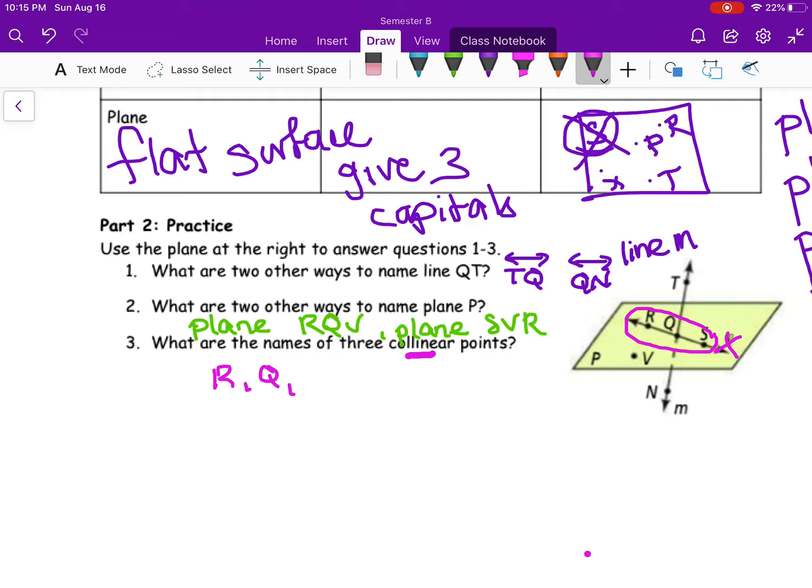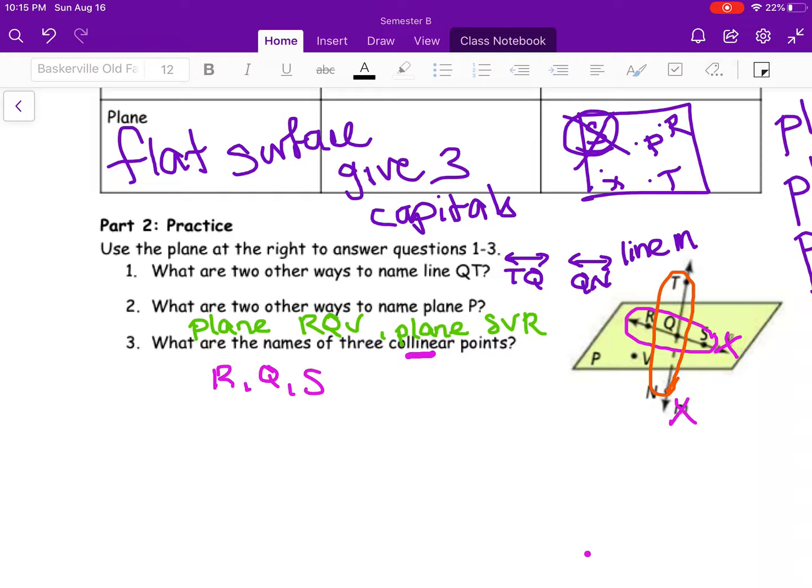So R, Q, and S are collinear. The only other options you have here, again, this is line M, so I can't use that one, is you could have done those three because they fall on the same line. Those are the only two options for that one.